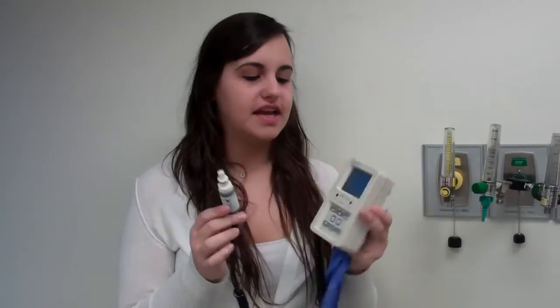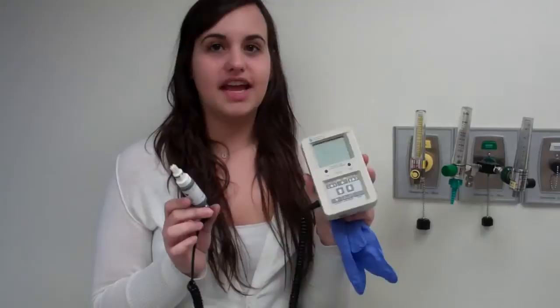Alright, so what I'm going to show you guys now is how to analyze your LVN. You're going to take the analyzer and you're going to try and calibrate it. You're going to do two point calibrations. You're going to do 100% and you're going to do 21%. In order to do 100%, you put a Christmas tree on the flow meter.